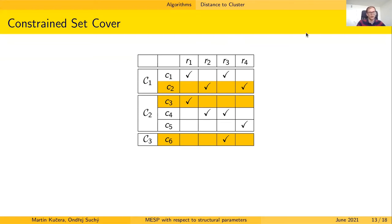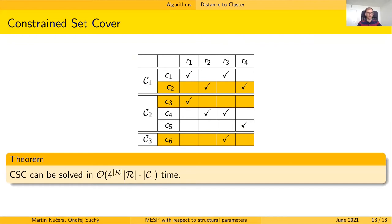The Constraint Set Cover problem can be solved in time O(4^R · R · C), where R is the number of requirements and C is the number of candidates. This is done via a straightforward dynamic programming approach.